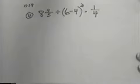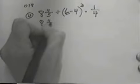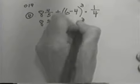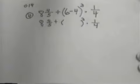Now we're going to try one that has some parentheses in it. 8 and 4/5 plus the expression 6 minus 4 cubed times 1/4. So as our rules tell us, we'll begin inside of our parentheses. So we'll copy everything else down just as it is. 8 and 4/5 plus, put our parentheses, put our cubed times the 1/4.